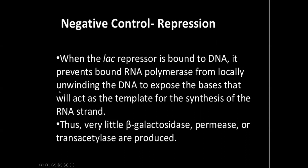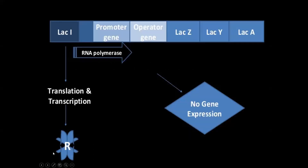When the repressor is bound to DNA, it prevents bound RNA polymerase from locally unwinding the DNA to expose the bases. If the repressor binds tightly to the operator, the RNA polymerase can't reach the unwound DNA because DNA unwinding will not take place. So there won't be any transcription, and very little beta-galactosidase, permease, or transacetylase is produced. When glucose is used as a carbon source, this repressor binds to the operator and there won't be any gene expression.